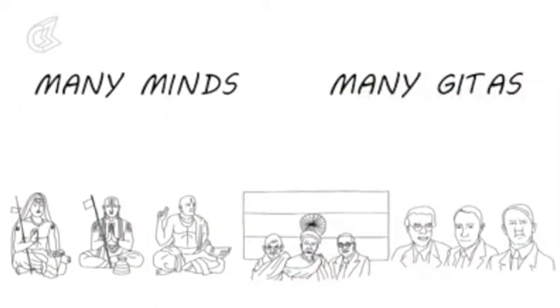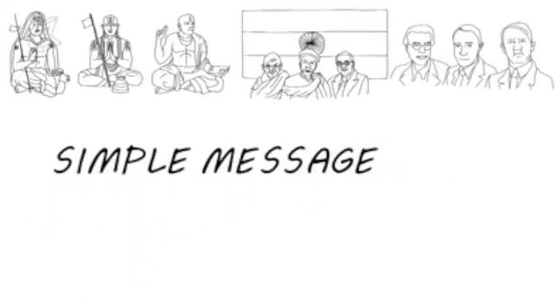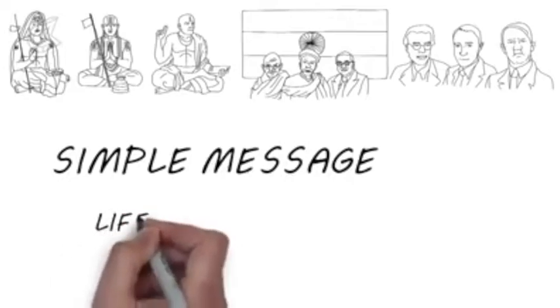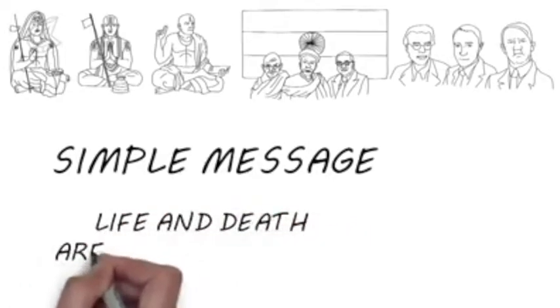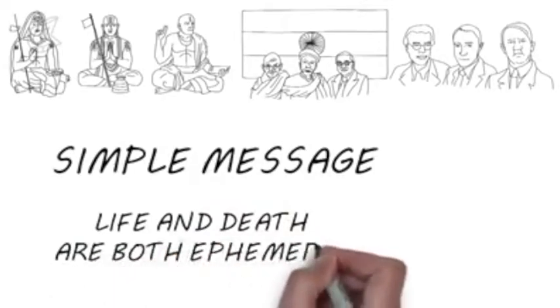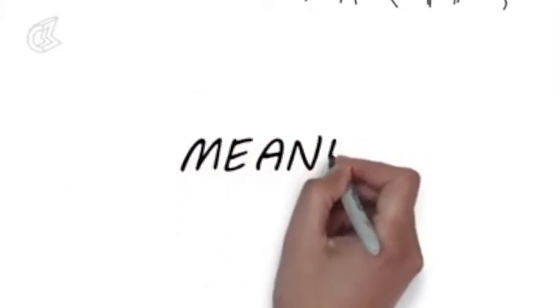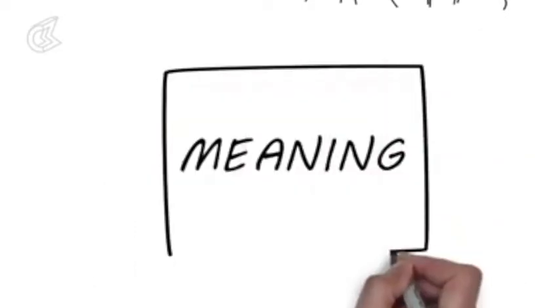While it has lived for long and meant many things to many people, the Gita's message remains as simple as it was when the Rishis first contemplated the Vedas. Our world is one of infinite variety and change. Life does not last. Neither does death. We see the world as we are. We create meaning by giving shape to emptiness and by creating boundaries to contain the infinite.